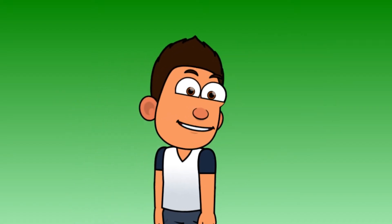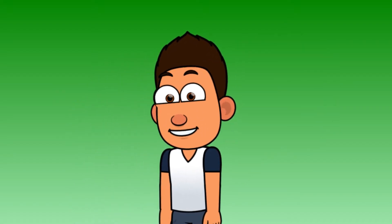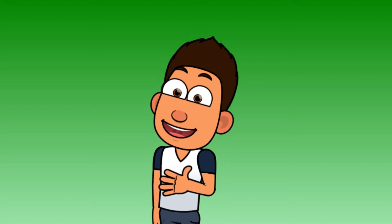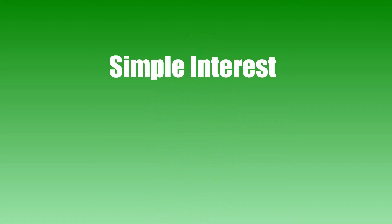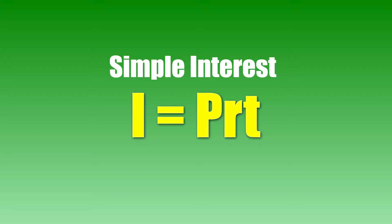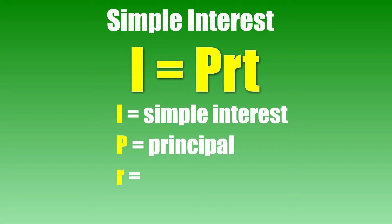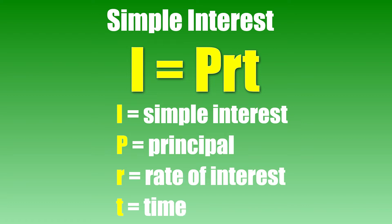How to calculate simple interest? Simple interest is calculated using an investment or loan's principal balance — the amount that you invested or borrowed initially. The formula is: Simple Interest equals P times R times T, where P is the principal, R is the rate of interest in percent per year, and T is time. The interest rate should be written as R over 100 or as a decimal.